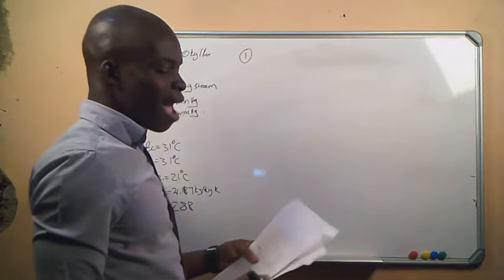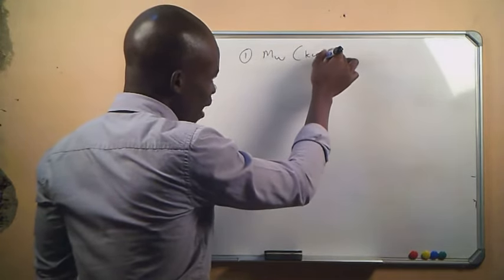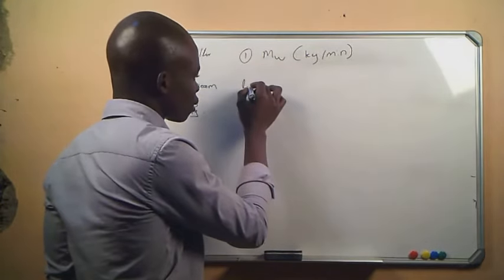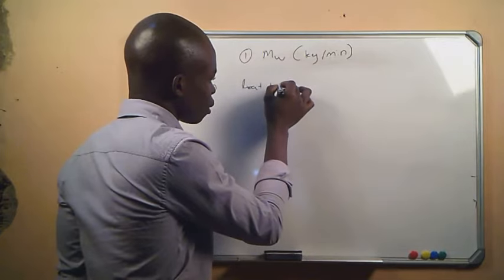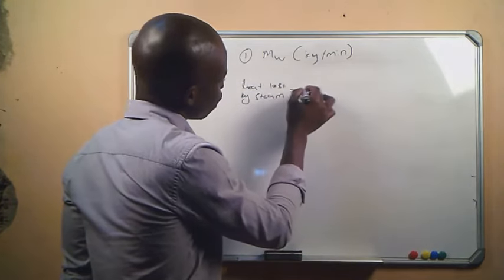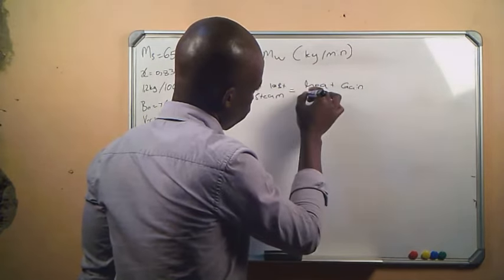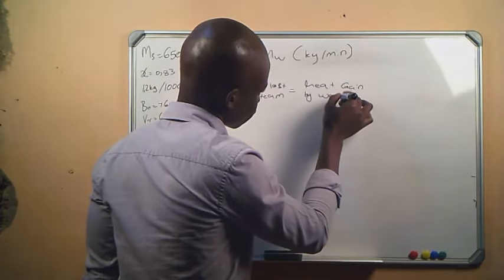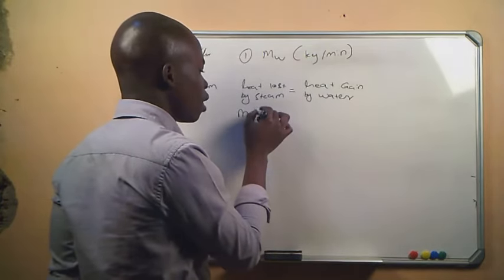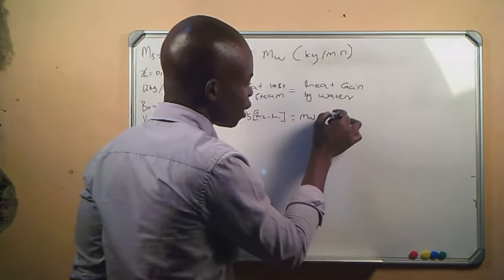We are looking for the mass of water in kg per minute. We know that heat loss by steam equals heat gained by water. The formula is: mass of steam times (h2 minus h1) equals mass of water times specific heat capacity times the change in temperature.